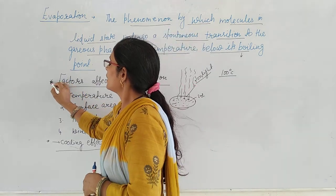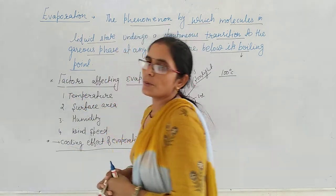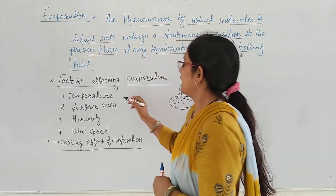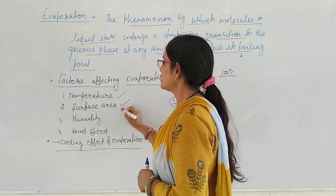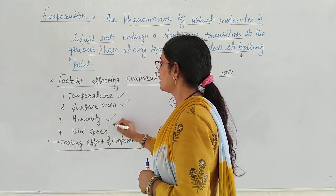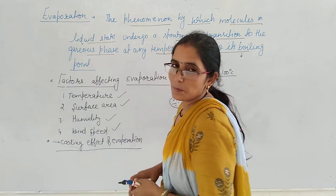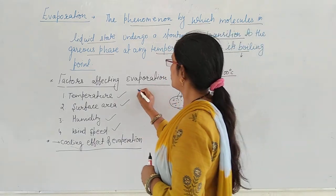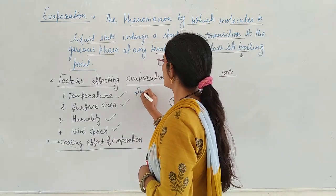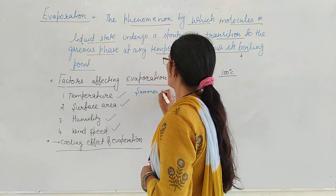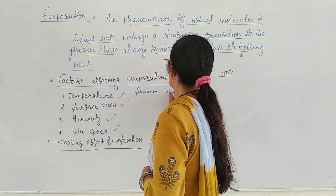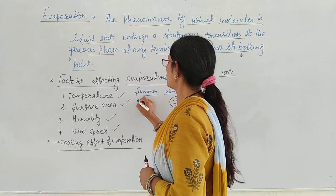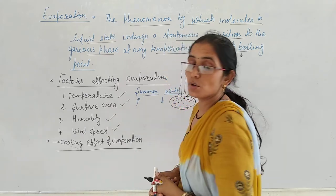The second topic is factors affecting evaporation. Which factors affect evaporation? First is temperature. Second is surface area. Third is humidity. Fourth is wind speed. Let's talk about temperature. For example, let's take two conditions: summer and winter. In summer the temperature is high, and in winter the temperature is low.